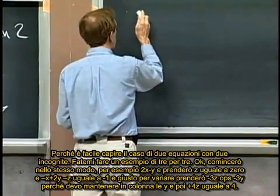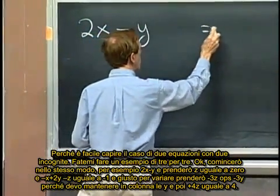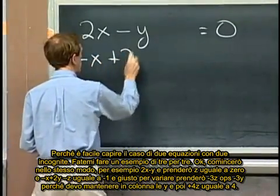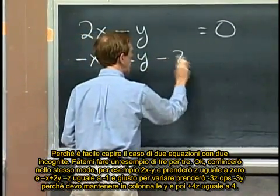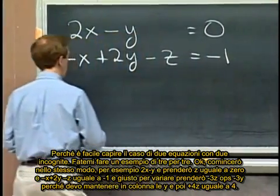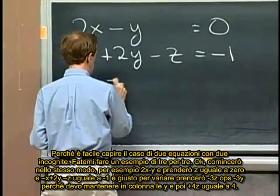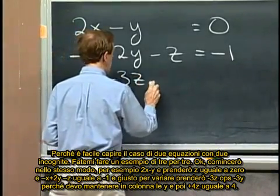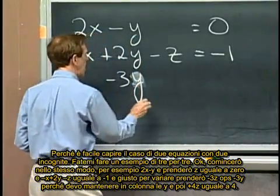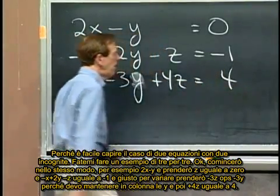I'll sort of start it the same way, say maybe 2x minus y, and maybe I'll take no z's as zero, and maybe a minus x and 2y, and maybe a minus z is, let me make that a minus one. And just for variety, let me take minus three z, minus three y's, I should keep the y's in that line, and four z's is, say, four.